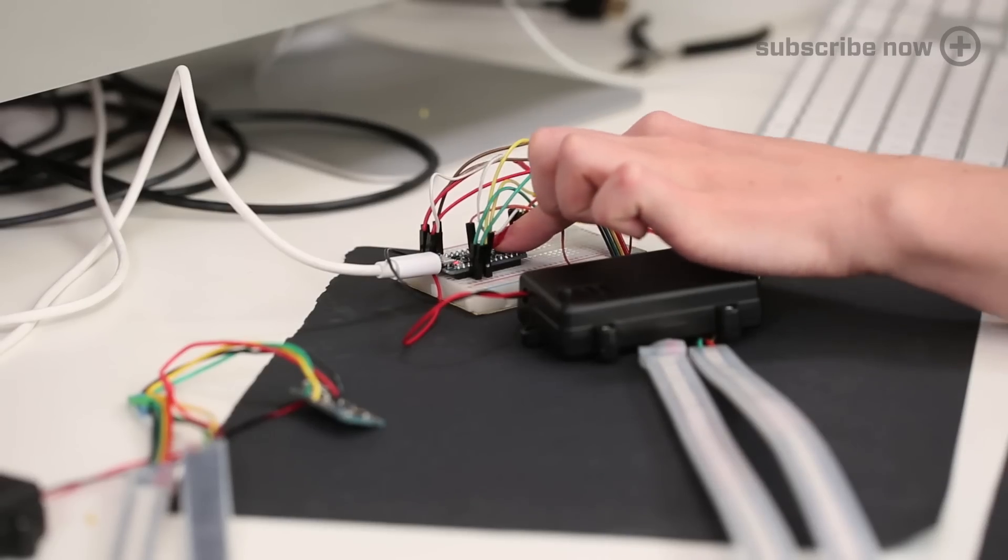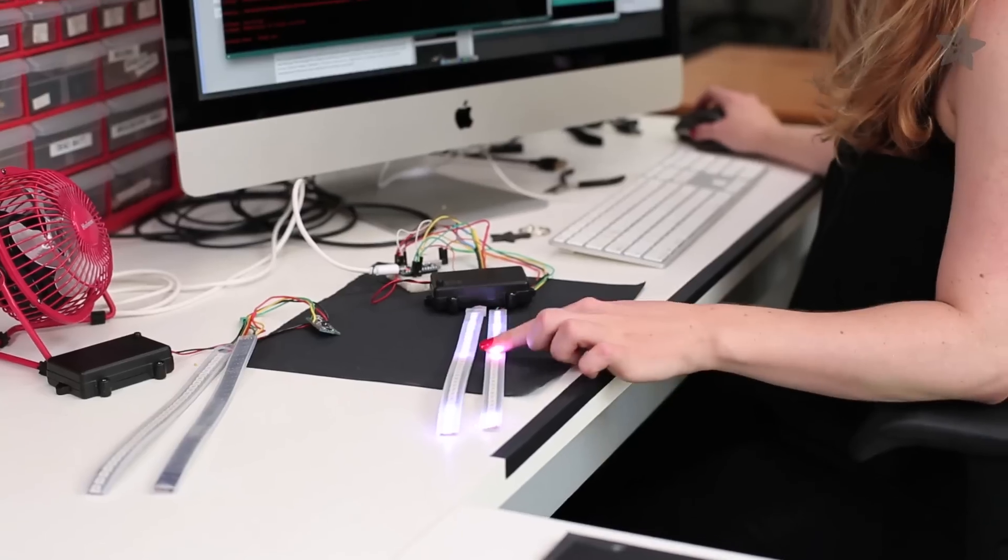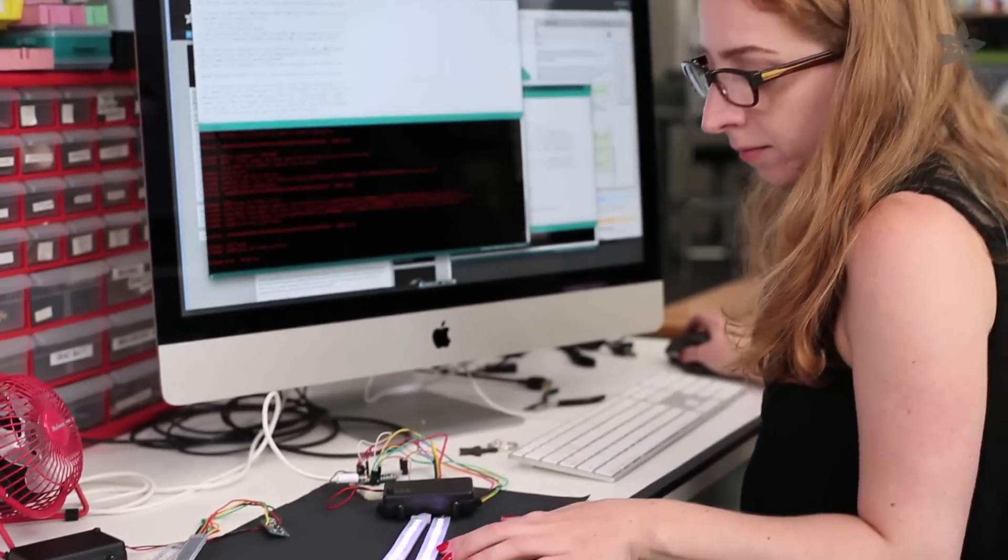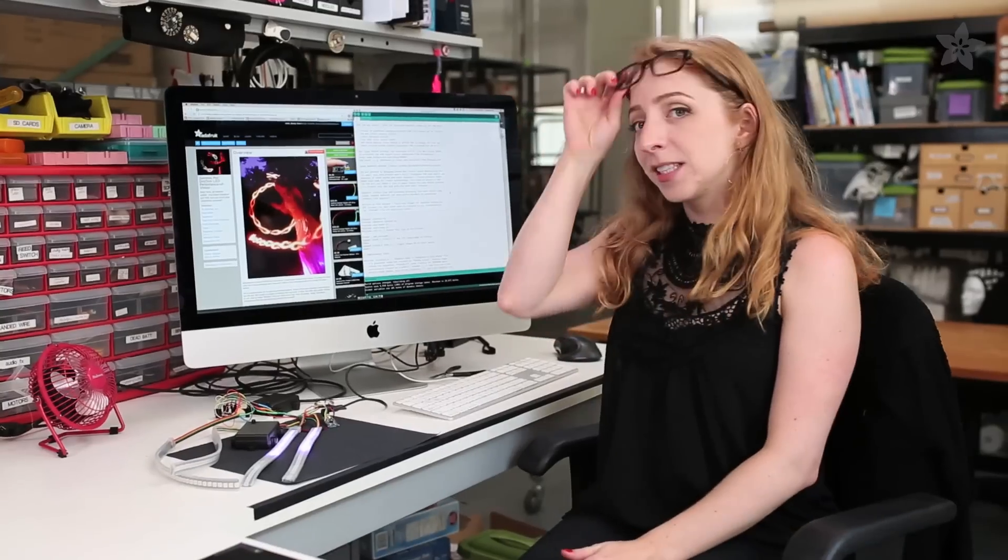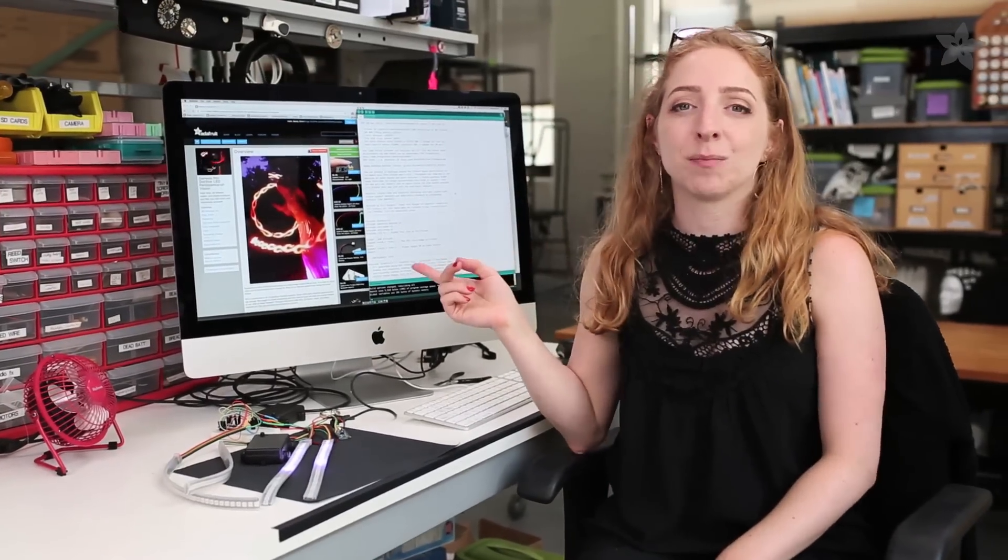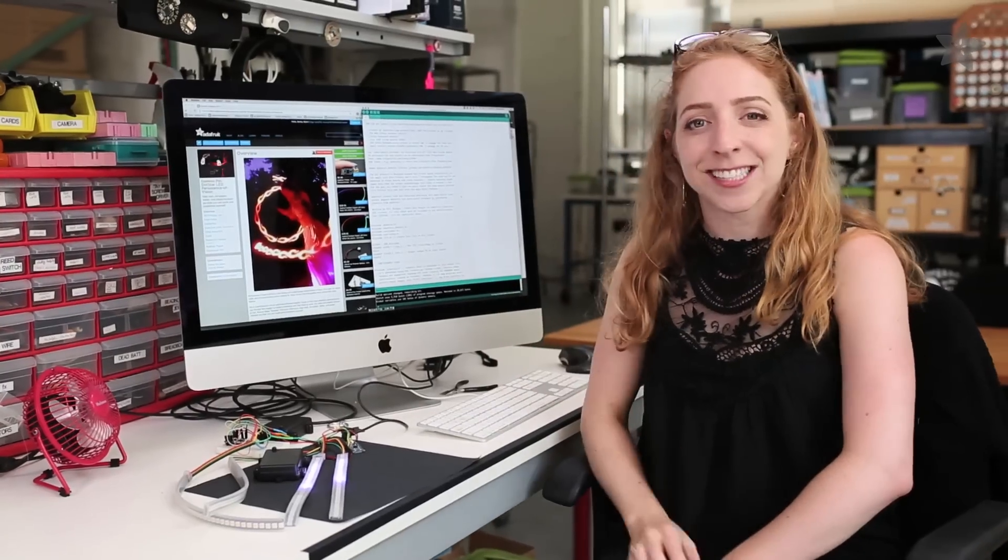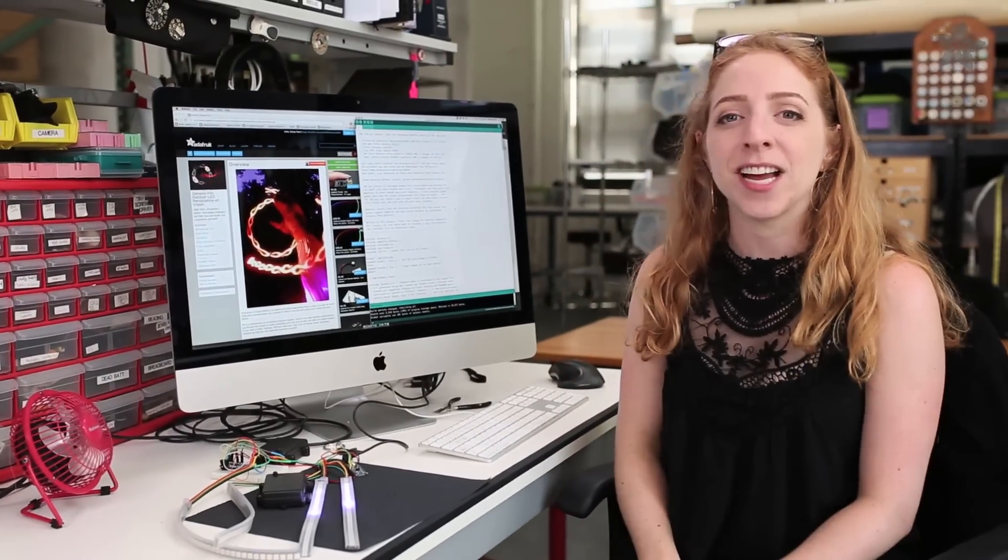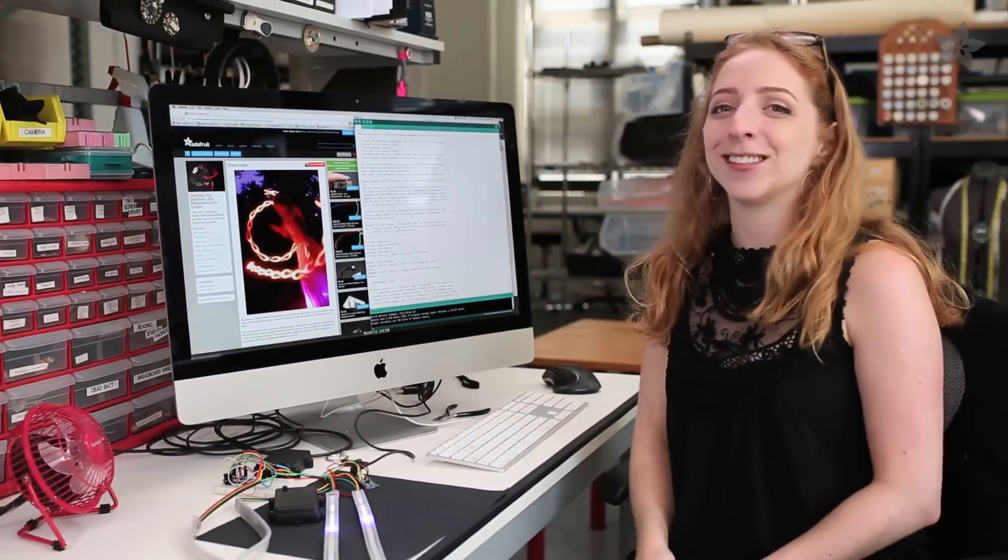Once you have a prototype, you can load up the Arduino code and test the circuit. This project uses the same code as Phil B's Genesis Poi, and you can learn how to create your own custom images or use the sample images provided at the complete guide in the Adafruit Learning System.